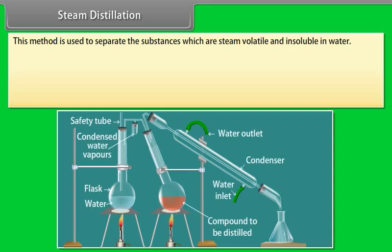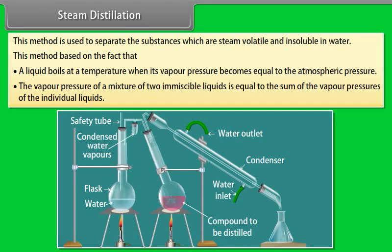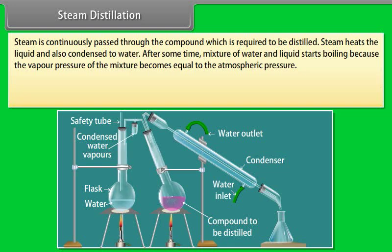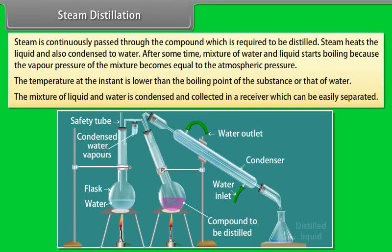Steam distillation: this method is used to separate substances which are steam volatile and insoluble in water. It is based on the fact that a liquid boils when its vapour pressure equals atmospheric pressure, and the vapour pressure of a mixture of two immiscible liquids equals the sum of their individual vapour pressures. Steam is continuously passed through the compound, heating it and condensing to water. After some time, the mixture boils because its vapour pressure equals atmospheric pressure, at a temperature lower than the boiling point of either substance. The mixture of liquid and water is condensed, collected in a receiver, and can be easily separated.